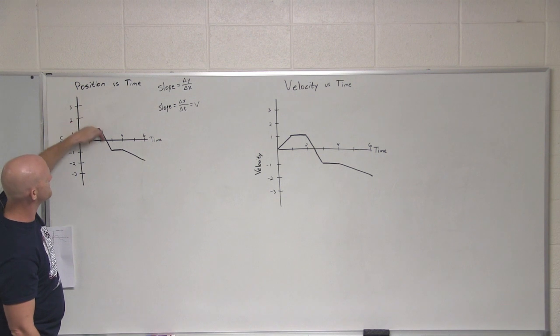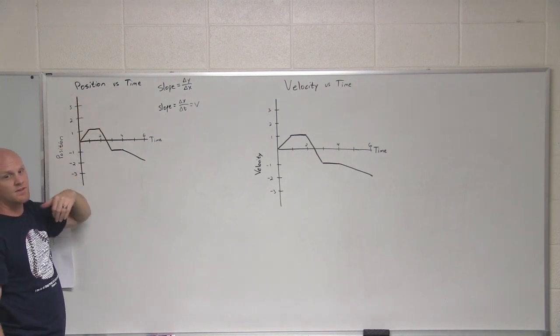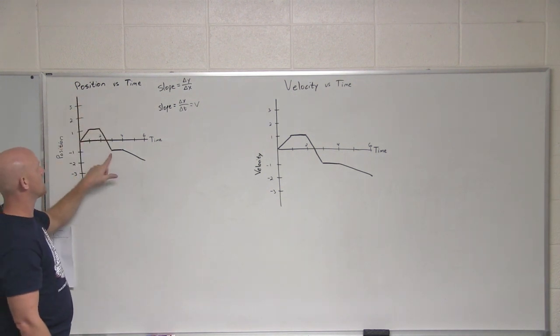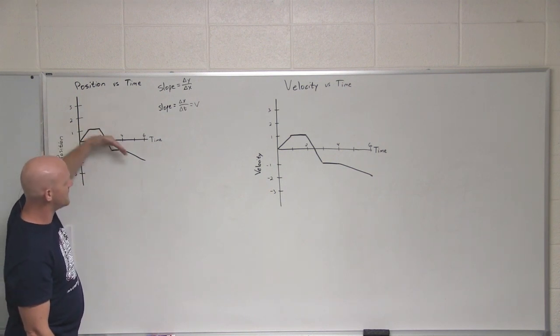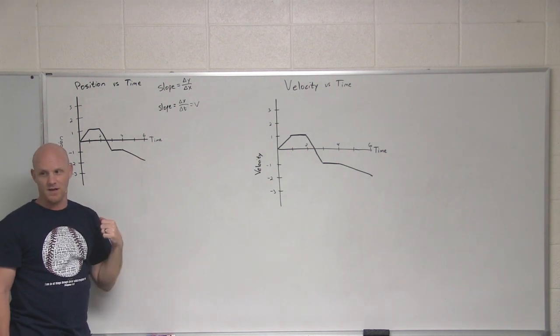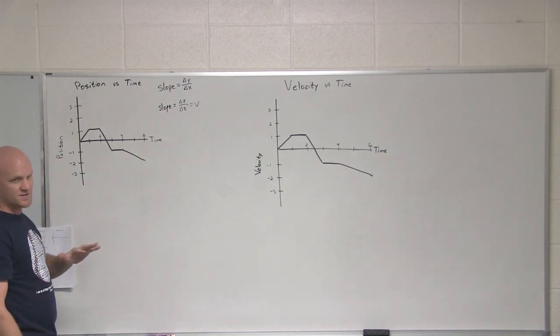From two to three seconds, it's a downhill slope. That's a negative velocity. This object is moving backwards. So from three to four, again, zero slope. It's not moving. And from four to six, again, a negative slope. It's moving backwards, a negative velocity in that case. Any questions on that?